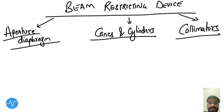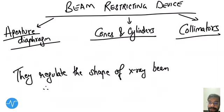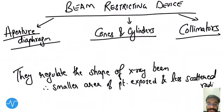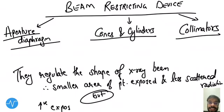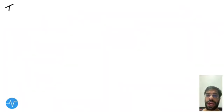Beam restricting devices — there are three types: aperture diaphragm, cones and cylinders, and collimators. What they do is regulate the shape of the x-ray beam, so a smaller area of the patient is exposed and there is less scattered radiation. The disadvantage is that there will be increased exposure to the patient to compensate for image quality.